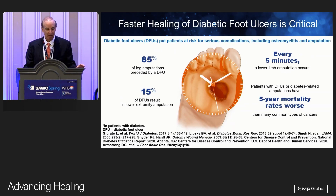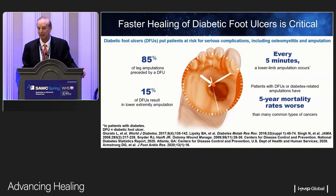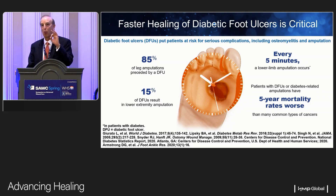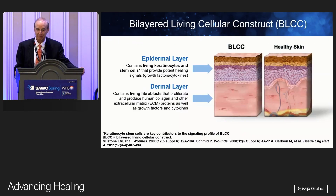Diabetic foot ulcers are a very important disease state. We know that 85% of leg amputations are preceded by diabetic foot ulcers. One in every six or seven diabetic foot ulcers eventually ends in amputation, and every five minutes an amputation occurs. Amputation is not even the worst outcome — the five-year mortality for these patients is somewhere between 30 and 50%, more than prostate or breast cancer. So it's critical that we approach these patients in a logical way.